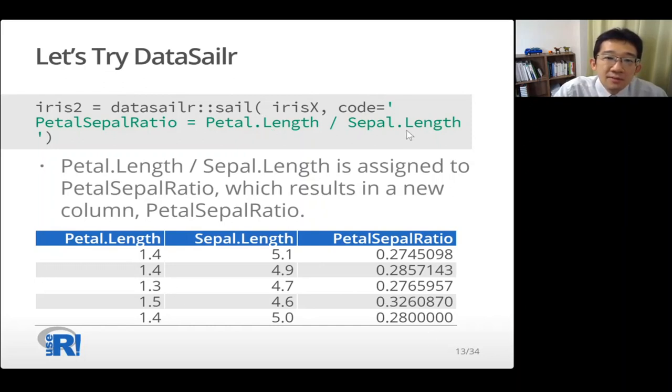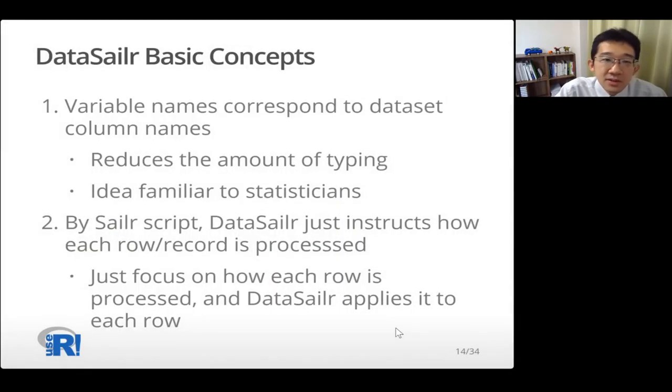So this is a variable. Variable names correspond to column name and new column name. When we use a variable with a new column name, the new column is created. So this example shows basic concepts of Data Sailr. Variable names correspond to data set column names. This reduces the amount of typing, like non-standard evaluation in R. And this idea is familiar to statisticians because they call column names as variables. Second, by Sailr script, Data Sailr just instructs how each row or each record is processed. So we can just focus on how each row is processed and Data Sailr applies it to each row.